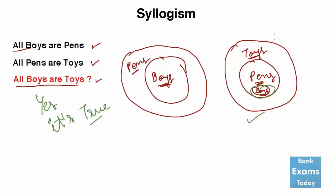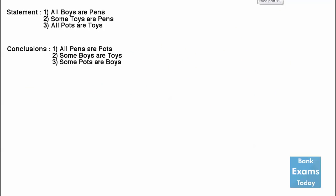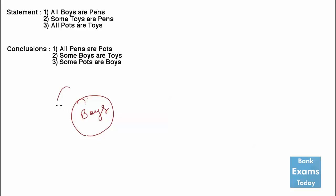Let's do some more difficult questions that will be asked in the real exams. There are three statements and three conclusions, and we have to find whether these statements lead to the conclusions. Let's start with the first statement: all boys are pens. We draw a circle — all the boys are part of the bigger circle that is pens.